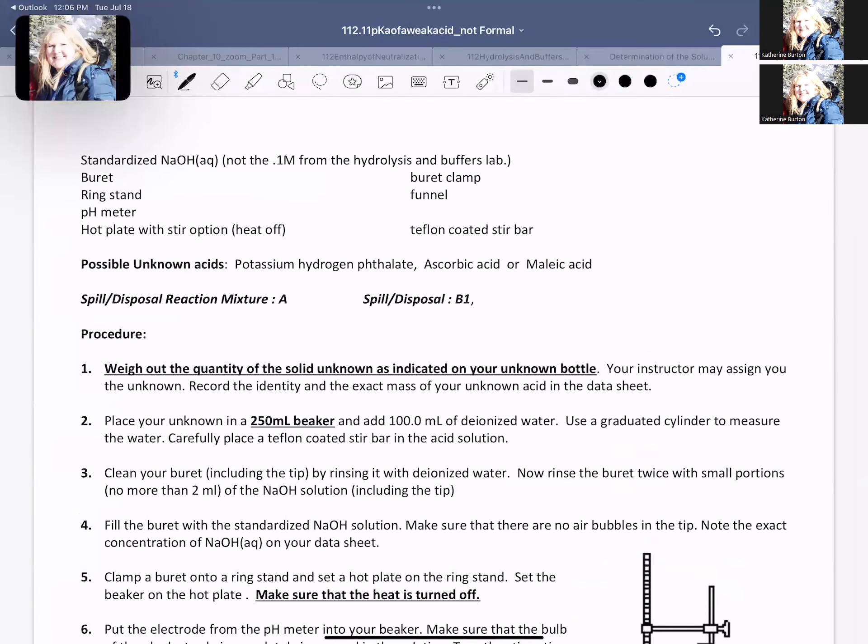First of all, our possible acids here are potassium hydrogen phthalate, ascorbic acid, maleic acid, and there could be one more. If there is, your instructor will let you know on that one. So these are your possible unknowns.